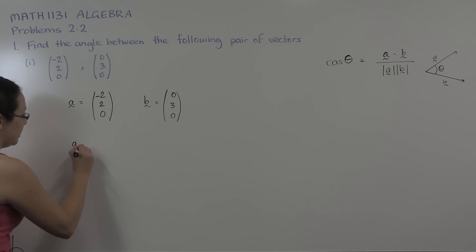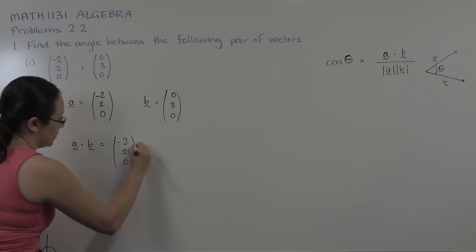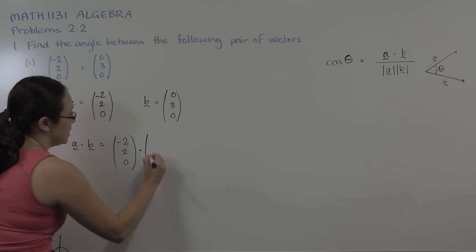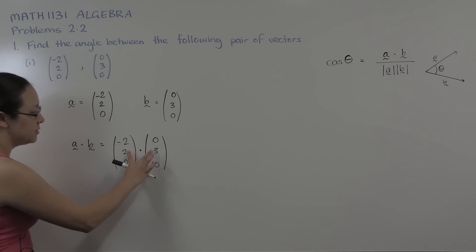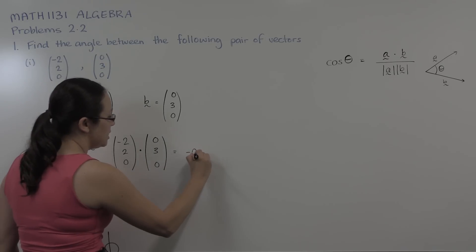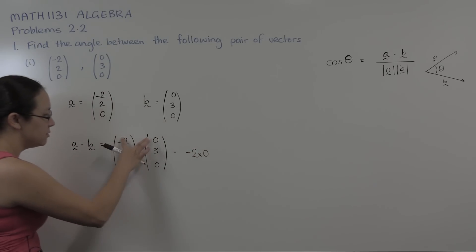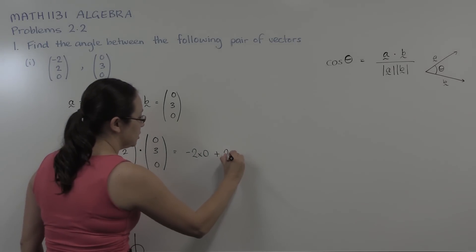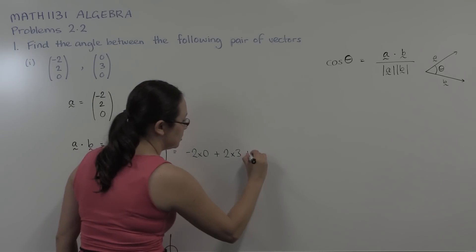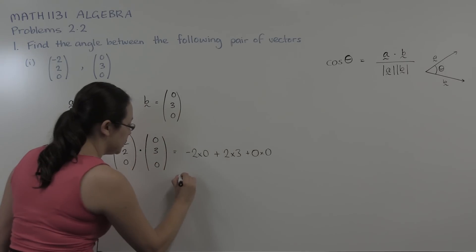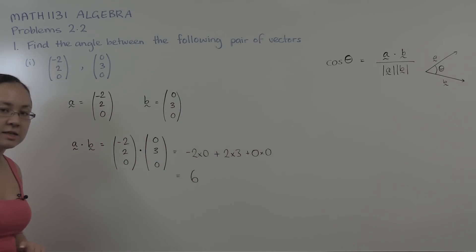So the dot product of a and b, this is a scalar quantity. We should just get a number at the end of the day, and the dot product is the sum of the product of each of these components. So the dot product here is going to be minus two times zero, that's the first component, plus two times three for the second component, plus zero times zero. So our dot product here is six.